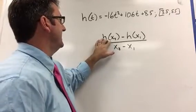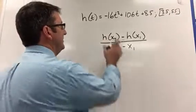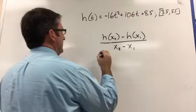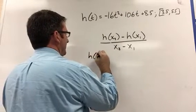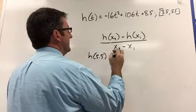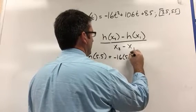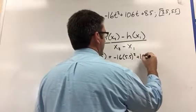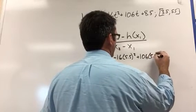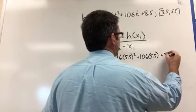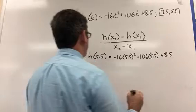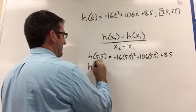All right, so let's plug this in. h(x2), so h(5.5), is going to be negative 16 times 5.5 squared plus 106 times 5.5 plus 8.5.